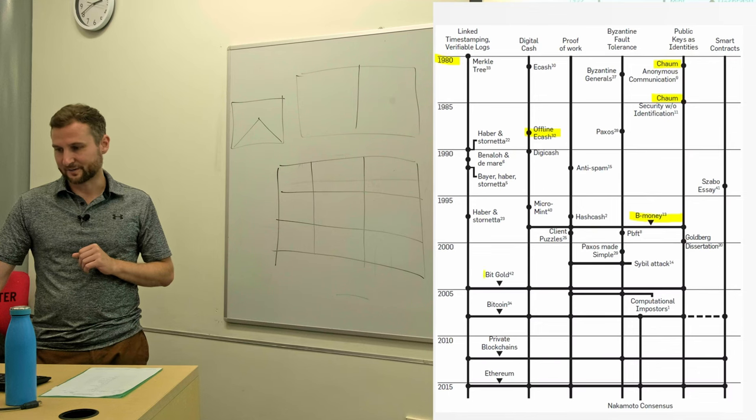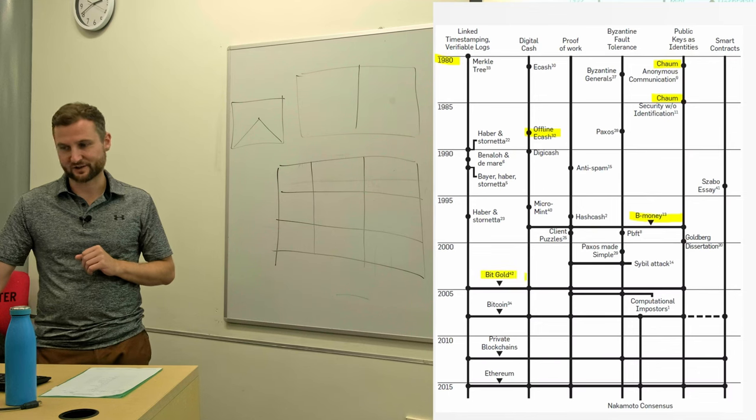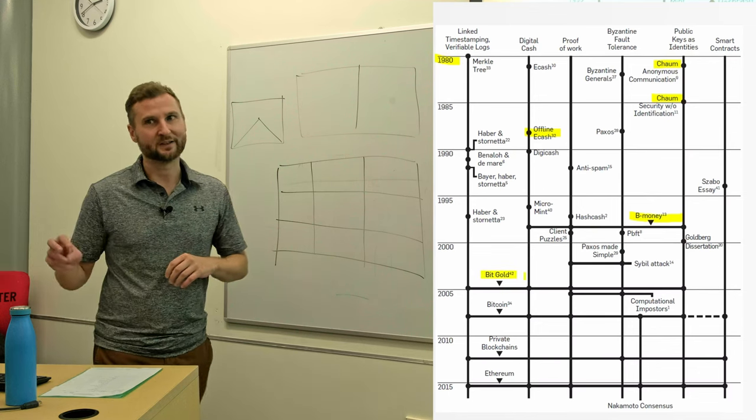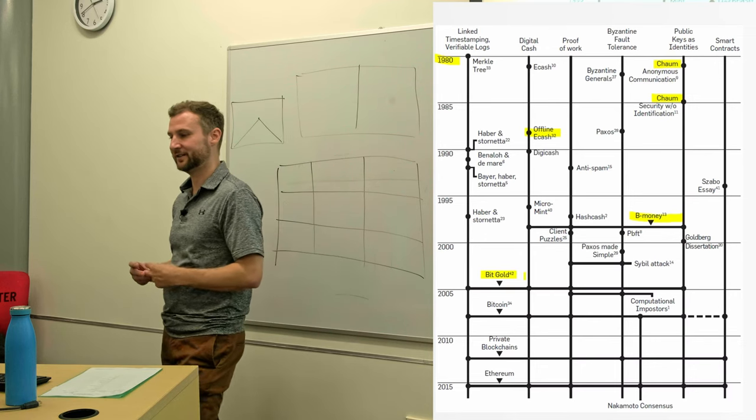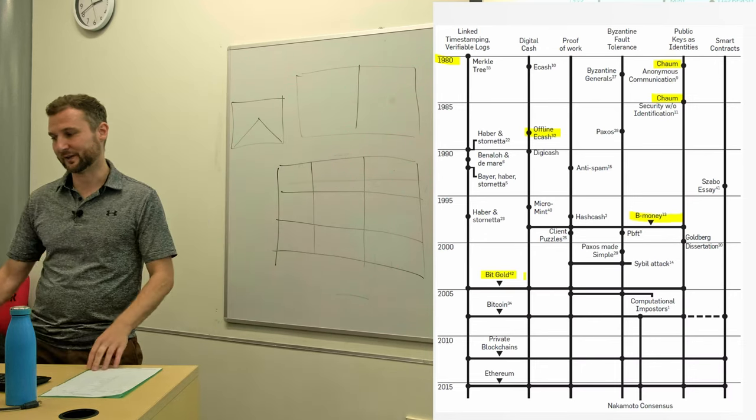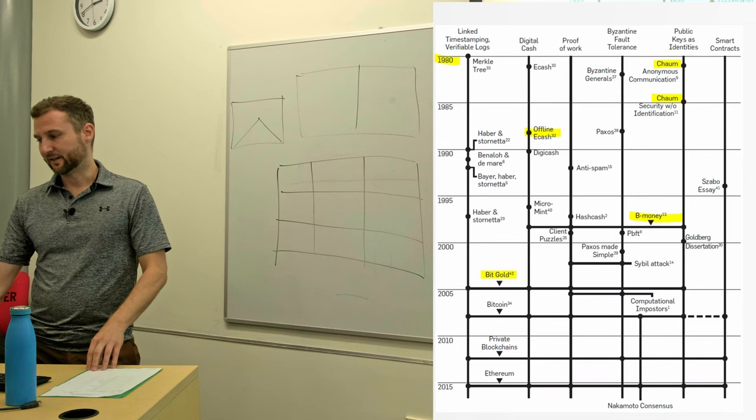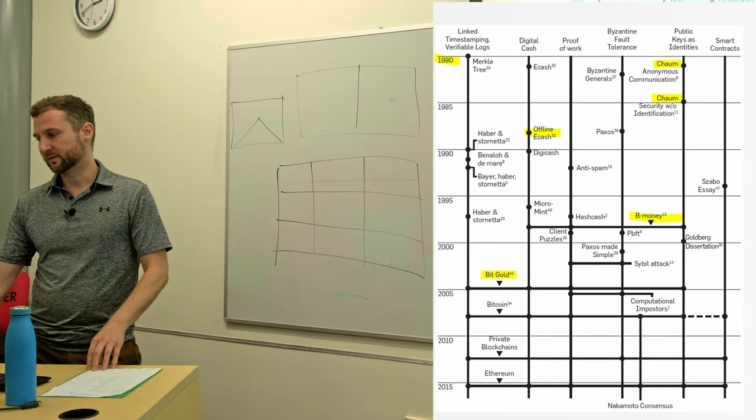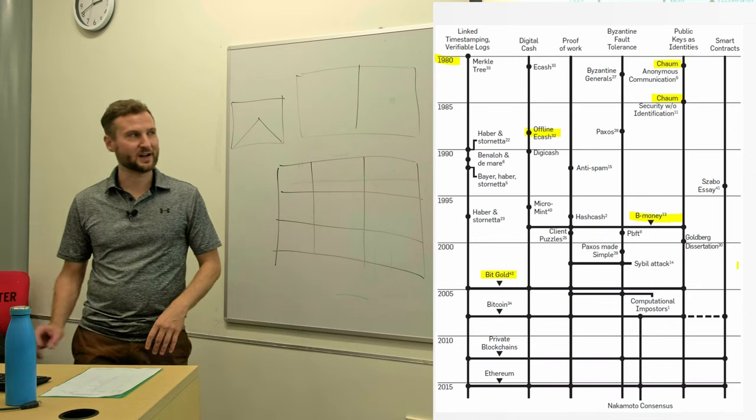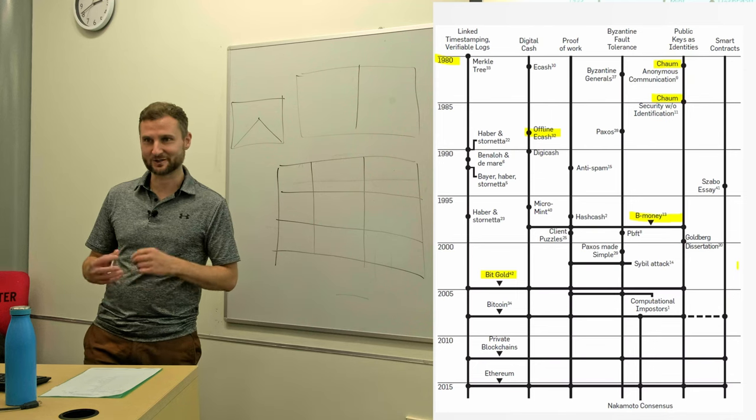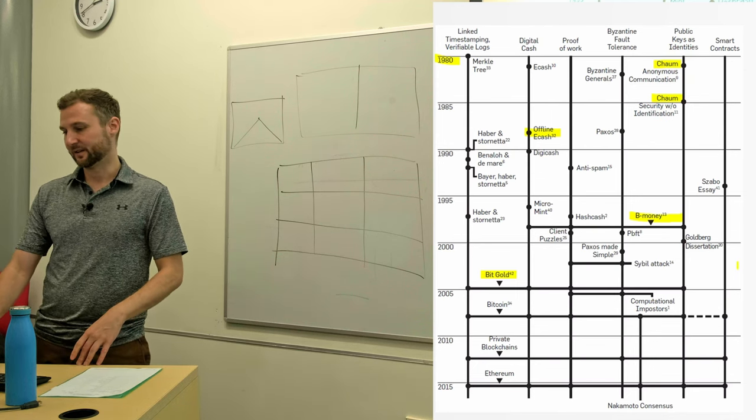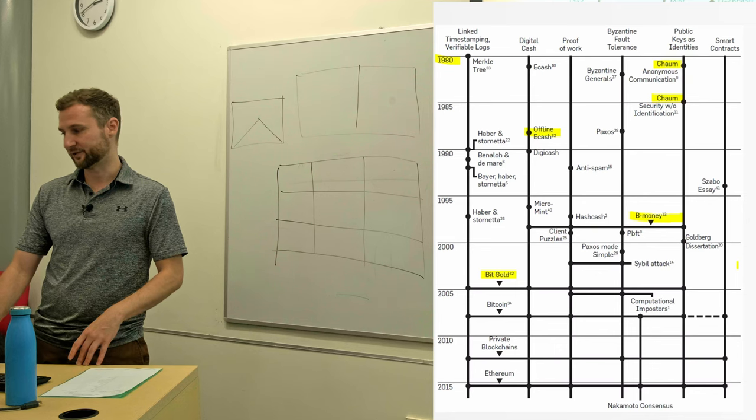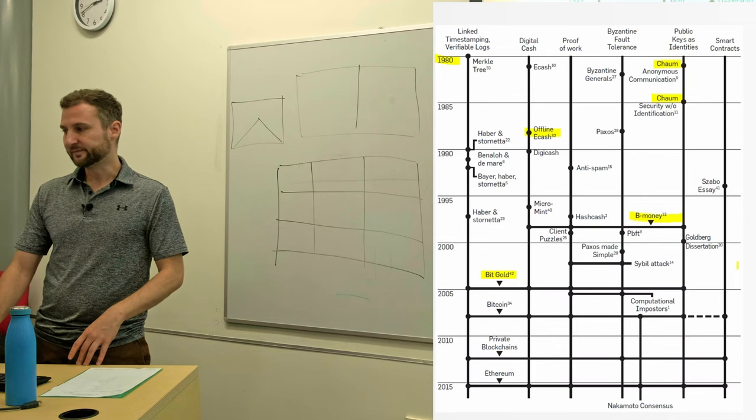And then another one that comes up a lot is Bitgold, which sort of starts to sound now like Bitcoin, meaning that gold is a good store of value, well known throughout history. So Bitgold and Bitcoin. This guy Nick Szabo is sometimes thought to perhaps be or have some close ties to the pseudonymous creator of Bitcoin, the anonymous creator of Bitcoin, Satoshi Nakamoto.